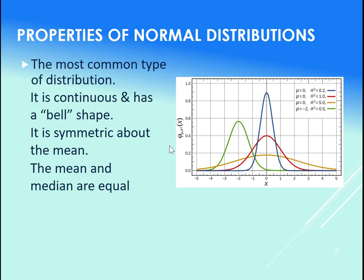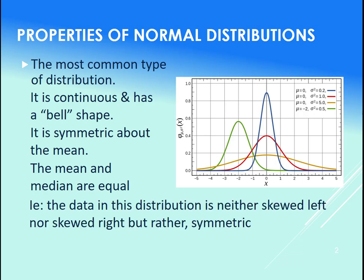So that means the mean and the median are equal. Or really, for real data they're roughly equal. So our data set is neither skewed left nor skewed right. We looked at that in previous videos. Rather, it is symmetric, so perfect mirror images on either side here.